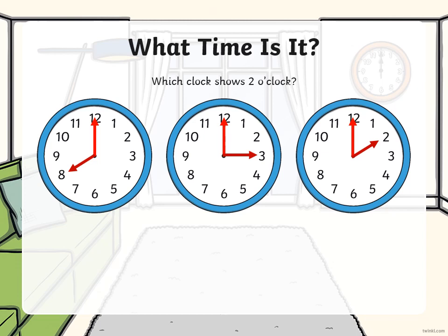What time is it? Which clock shows two o'clock? Let's have a look. We need to find the clock where our hour hand is pointing to the two. Here the hour hand is pointing to the eight, so that can't be two o'clock. Here the hour hand is pointing to the three, so that can't be two o'clock either. So it must be this one — the hour hand is pointing to the two, and the minute hand is pointing to the 12. Well done, everyone.